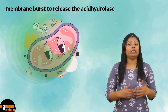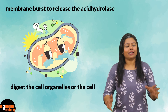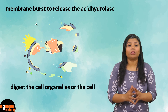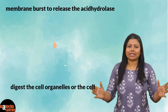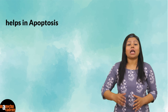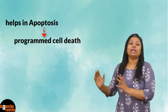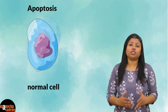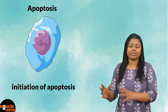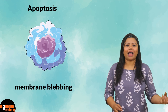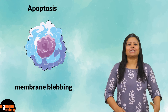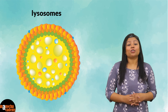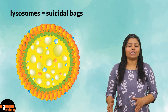When digestion needs to take place, this membrane bursts open, releasing the acid hydrolases, which can digest worn-out cell organelles or the entire cell. If it digests the entire cell, it essentially helps in apoptosis — programmed cell death. Every cell in our body has a certain lifespan, after which it should die, carried out by these bags of enzymes. That is why lysosomes are regarded as the suicidal bags.